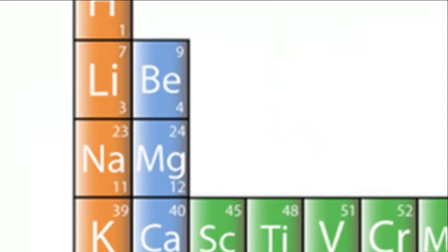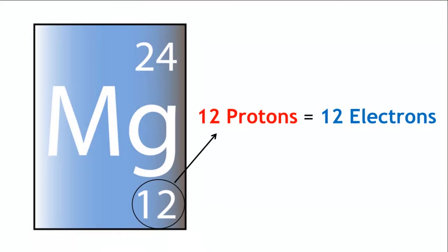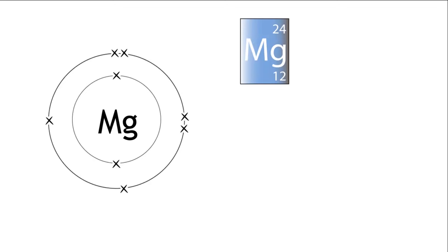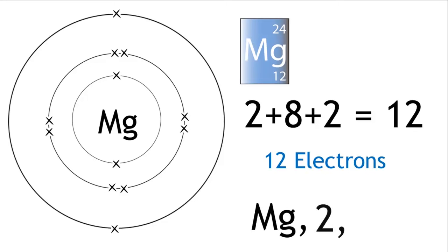Magnesium has twelve protons, therefore it has twelve electrons. The first two are placed in the first shell, the next eight are placed in the second shell, and the last two are placed in the third shell. Two plus eight plus two: twelve electrons. This will be written as Mg 2,8,2.